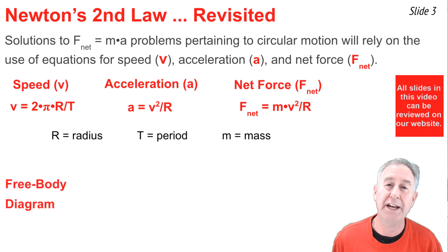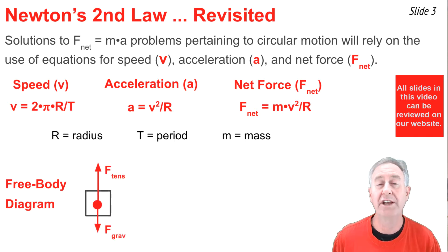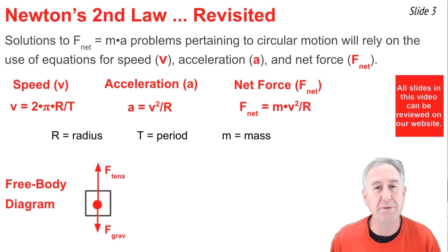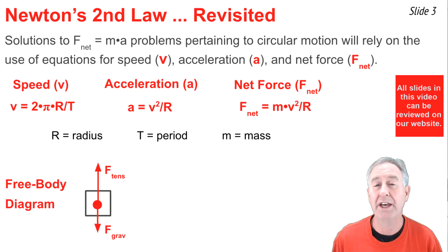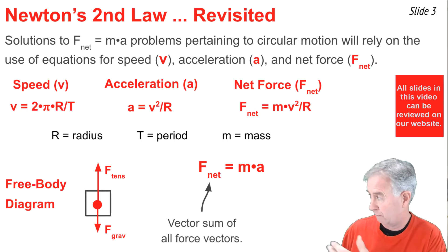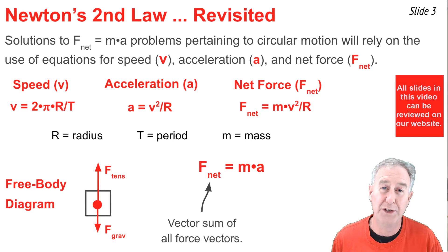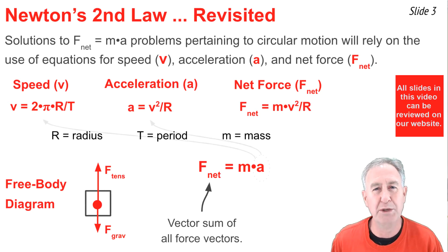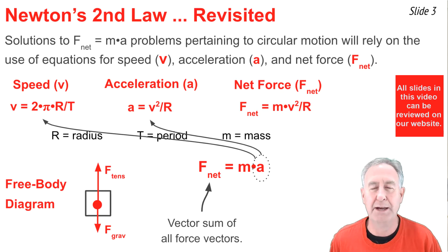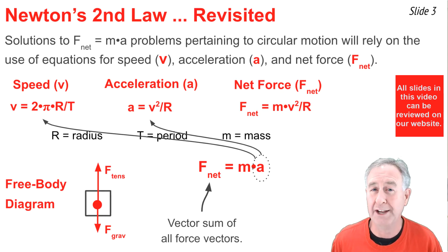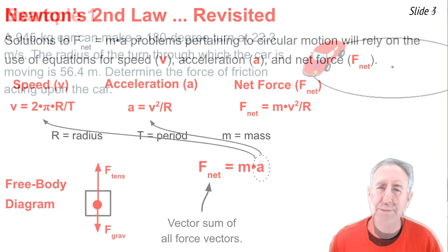The solution of these problems relies on the use of a free body diagram in which we draw individual forces and size them according to which one is biggest — like in this case where the tension force is bigger than the gravity force. Then we go F_net = ma. The F_net is the vector sum of all the forces; for this free body diagram that would be F_tension minus F_grav. The acceleration can be found from the circular motion equations. We'll see five examples of the use of these equations, the free body diagram, and Newton's Second Law to solve circular motion problems.